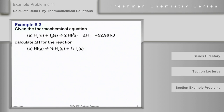Given the thermochemical equation H₂ gas plus I₂ solid goes to 2HI gas, delta H for that is 52.96 kilojoules as written — meaning if one mole of hydrogen reacts with one mole of diiodine to make two moles of HI, the heat change is 52.96 kilojoules. The problem then asks us to calculate delta H for the reaction where HI breaks up into one-half dihydrogen and one-half diiodine.